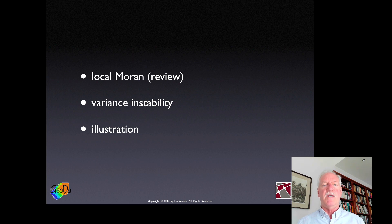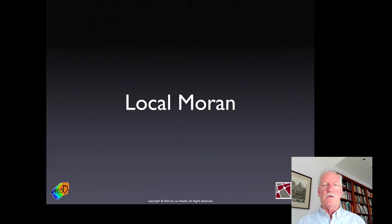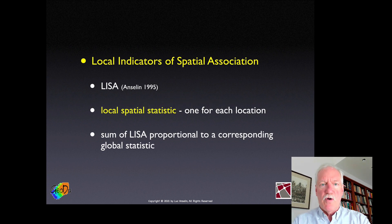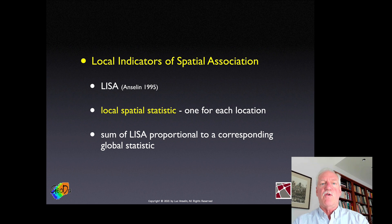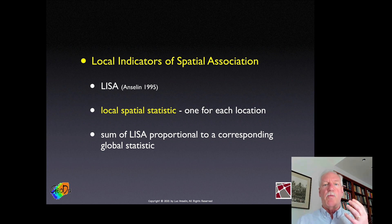The local Moran is an example of a Local Indicator of Spatial Association, or LISA. The LISA has two important characteristics: one is that there is a statistic for each location separately, for which we can assess significance. The other characteristic is that the sum of all the LISAs is proportional to a global statistic — so we have this tension between global and local.